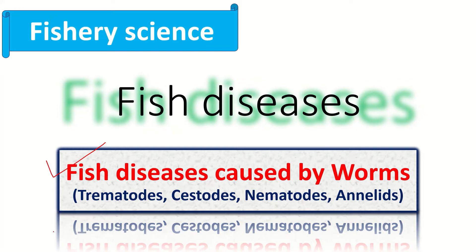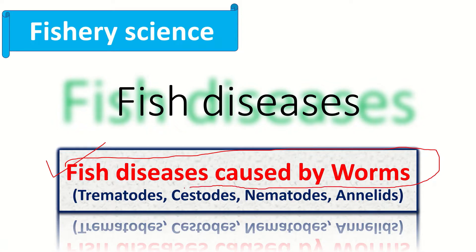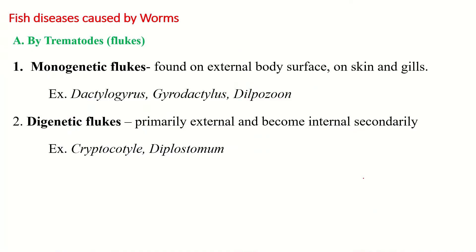Hello and welcome. Today we are going to discuss fish diseases, particularly those caused by worms. In our previous videos we discussed bacterial diseases, viral diseases, protozoan diseases, and fungal diseases. Now in this video we will take information about fish diseases caused by worms like trematodes, cestodes, nematodes, and annelid worms.